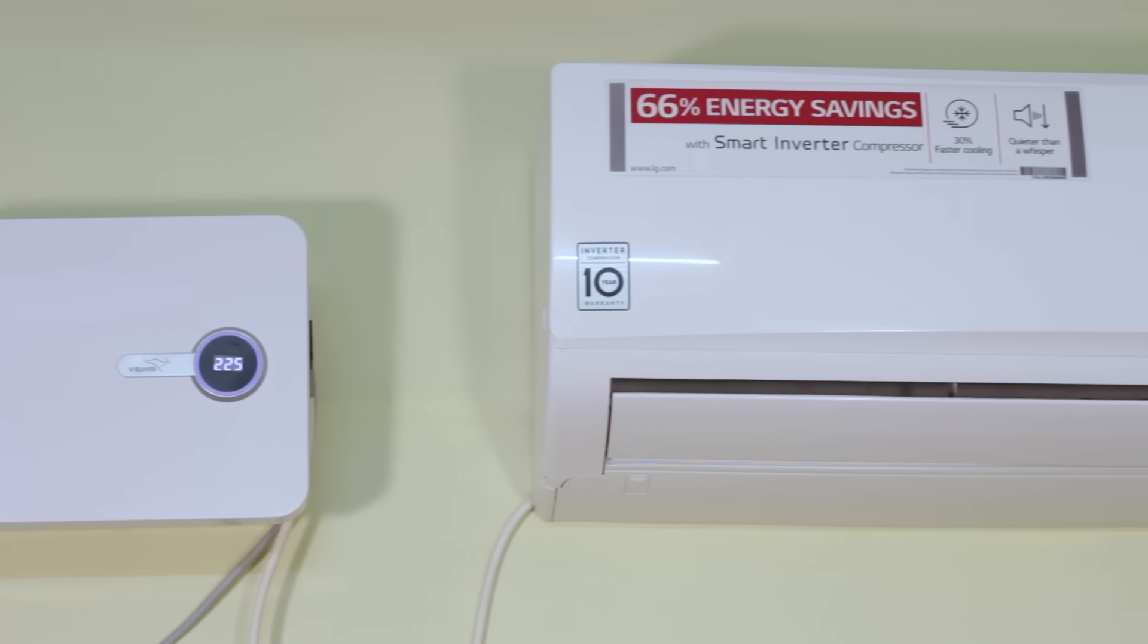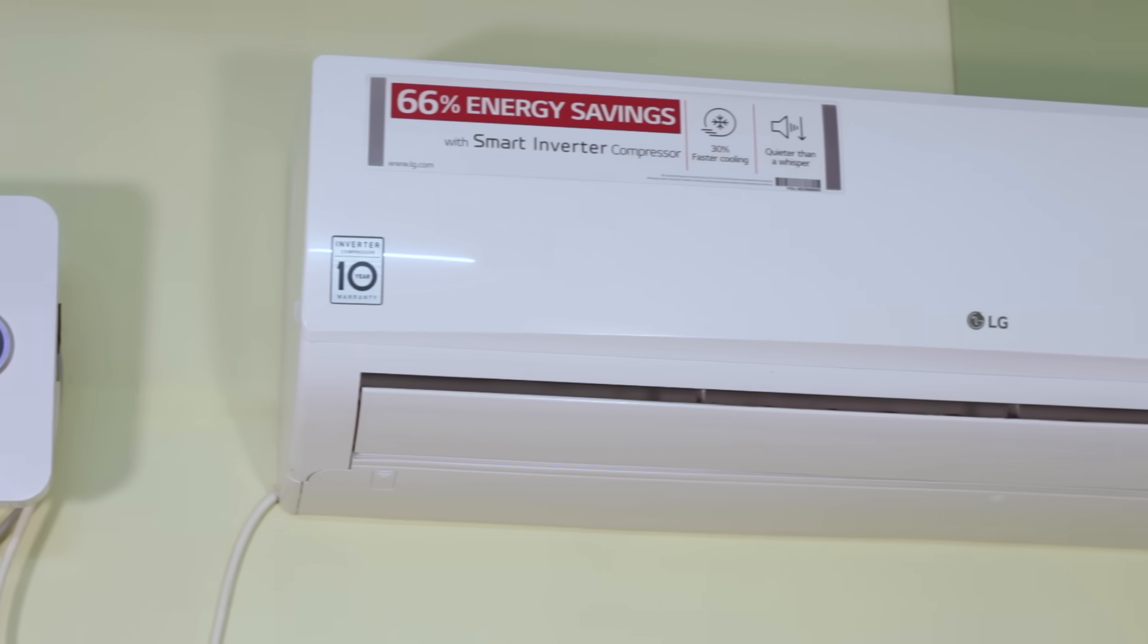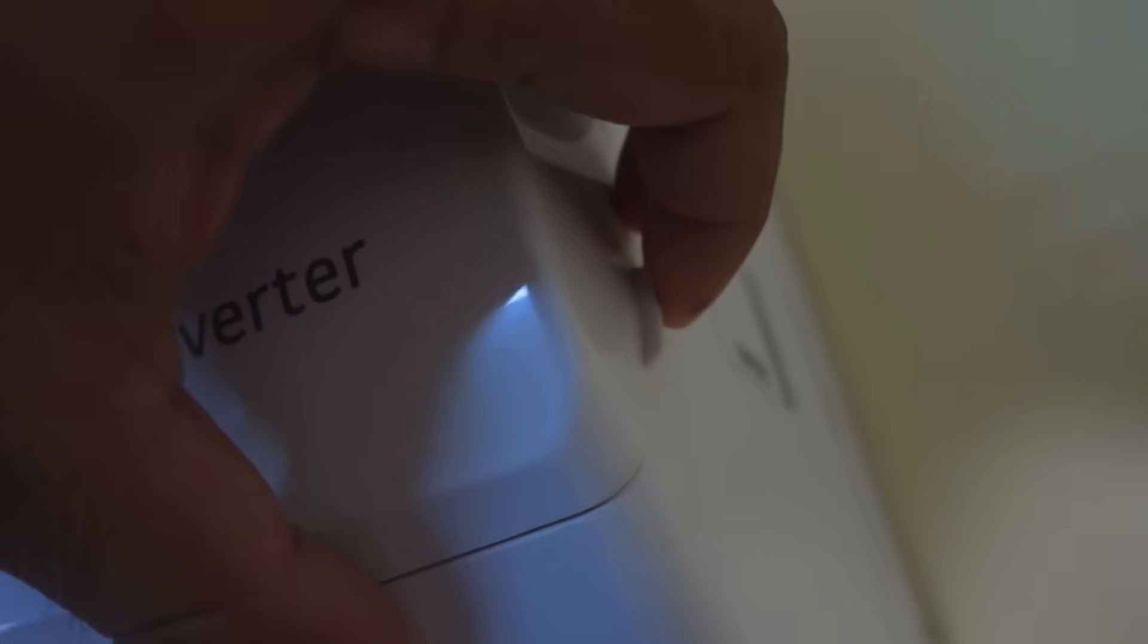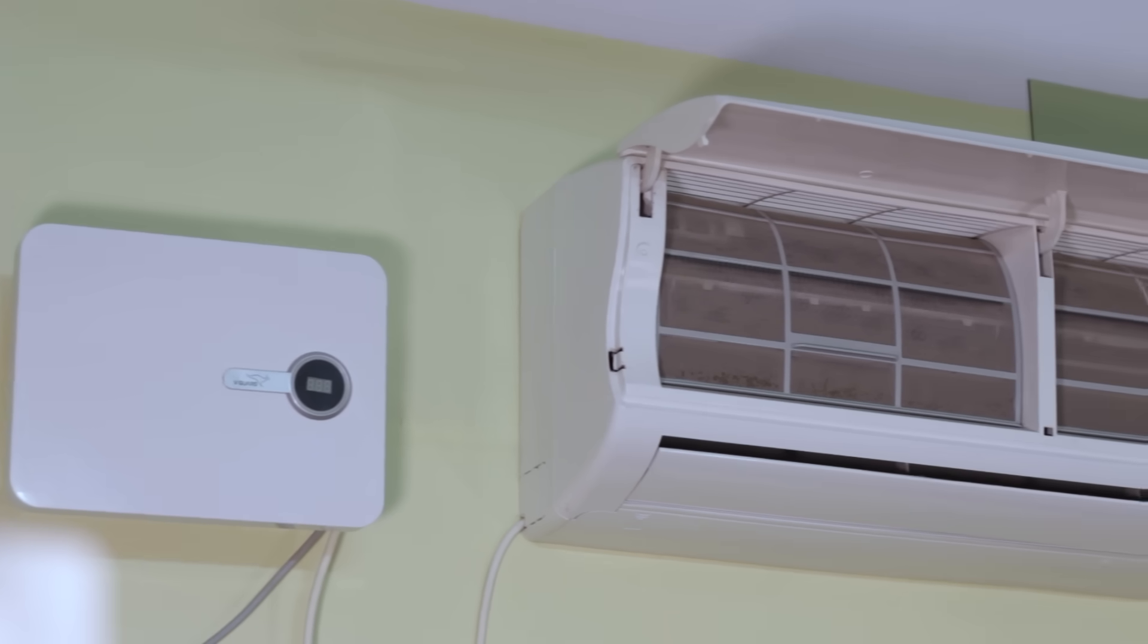Next we'll open the front panel of the indoor unit. It's pretty simple - just remove those clips and it will open. After opening the front panel you will see there are two air filters and those air filters are dirty, full of dust, and you need to clean it using simple water.